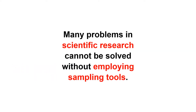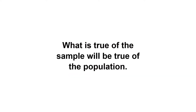Many problems in scientific research cannot be solved without employing sampling tools. Since most social phenomena consist of a large number of units, a researcher cannot always interview, test, or observe each unit under controlled conditions. Sampling tools solve this dilemma by helping researchers select representative units from a population. From the data gathered from these units, researchers draw inferences about the nature of the entire population and generalize that what is true of the sample will be true of the population.